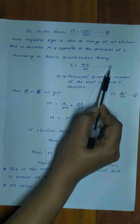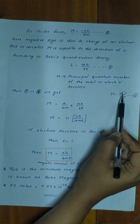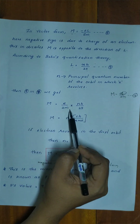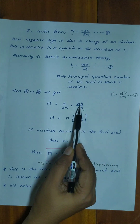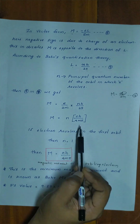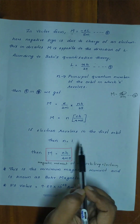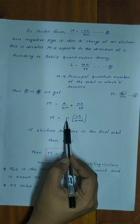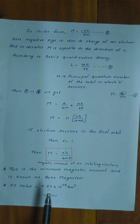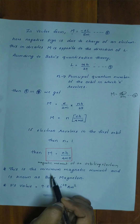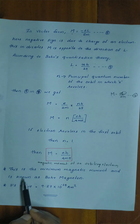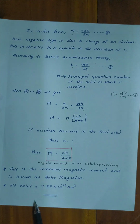Substituting equation 7 into M = eL/2m, we get M = (e/2m) × (nh/2π) = n × eh/4mπ. If the electron revolves in the first orbit, n = 1, giving M = eh/4mπ. This is the magnetic moment of an orbiting electron, and it is the minimum magnetic moment known as the Bohr magneton, with a value of 9.27 × 10⁻²⁴ A·m².